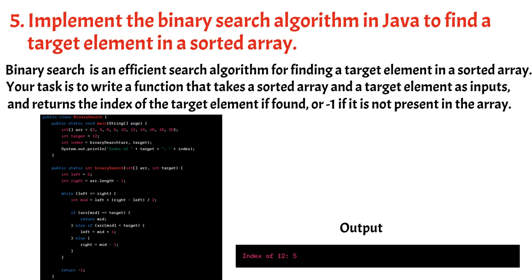It initializes two pointers, left and right, pointing to the start and end of the array respectively. Using a while loop, it calculates the middle index, mid, by taking the average of left and right. It compares the element at the mid index with the target element. If they are equal, it returns the mid index as the target element has been found. If the target is greater than the element at mid, it updates the left pointer to mid plus one, discarding the left half. If the target is less than the element at mid, it updates the right pointer to mid minus one, discarding the right half. This process continues until the left pointer surpasses the right pointer, indicating the target is not present, and the method returns -1.